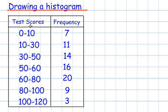So this table is about test scores and frequency. 7 people scored somewhere between 0 and 10, and 11 people scored somewhere between 10 and 30.